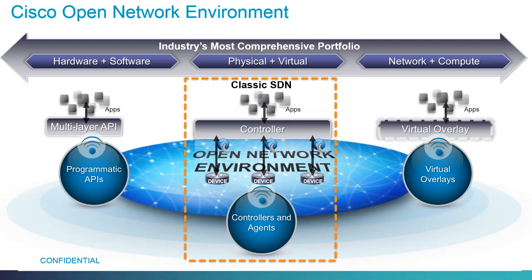SDN can be further categorized into various groups with a lot of different capabilities. On the left-hand side are more of the hardware and software capabilities, where you have to have a device with an API that can be accessed directly by an application. A prime example would be a Cisco Nexus 9K, 7K, or 5K that can natively talk Python or another protocol and take actions based on commands from an application.